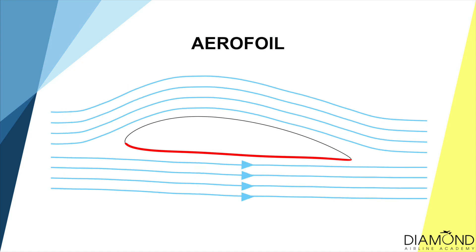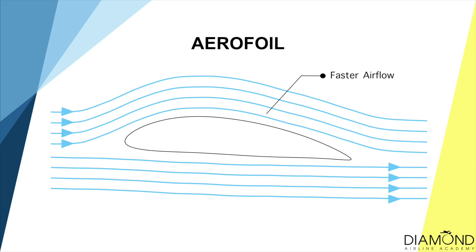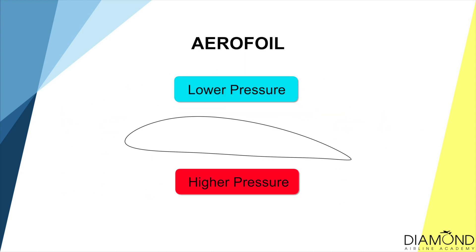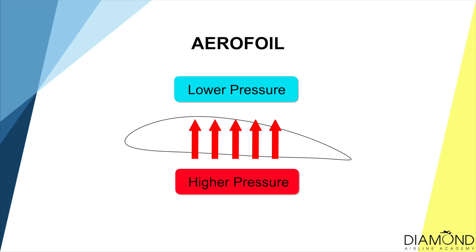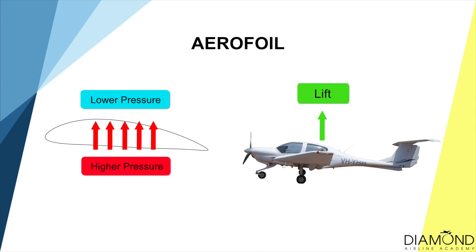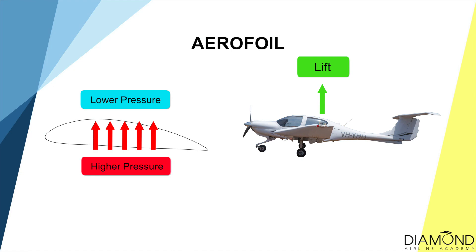Air has an interesting property: when it's travelling faster, air pressure decreases. So the top section of the wing will have lower air pressure, and the bottom will have higher air pressure. Air moves from higher pressure to lower pressure. The higher pressure at the bottom will try to move to the top of lower pressure, and the pressure difference will create a lifting force. This is the force that allows the airplane to fly in the air.